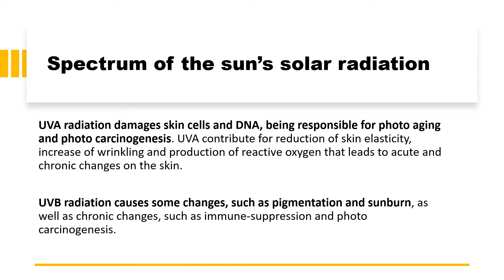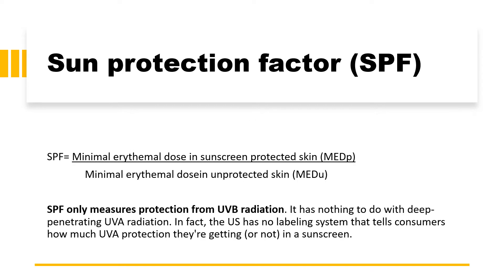Ultraviolet A radiation actually penetrates the deeper part of the skin and damages the skin cells and DNA, which ultimately leads to photoaging effects. So when formulating a sunscreen, we are basically concerned with ultraviolet B blocking agents. When we calculate the sun protection factor, the formula uses the minimum erythemal dose in sunscreen-protected skin versus the minimal erythemal dose in unprotected skin. It only measures protection from UVB radiations. It has nothing to do with the deeper-penetrating UVA radiation. In fact, in the US there has been no labeling system that tells the consumer how much UVA protection they are getting in a sunscreen.